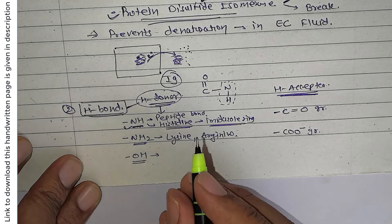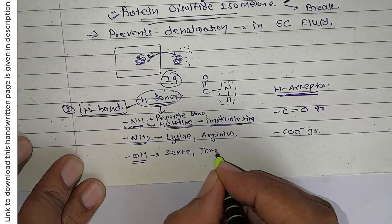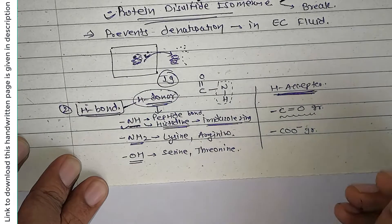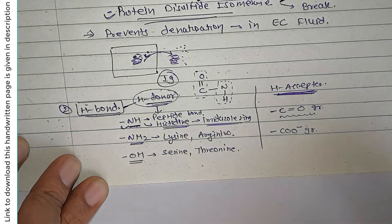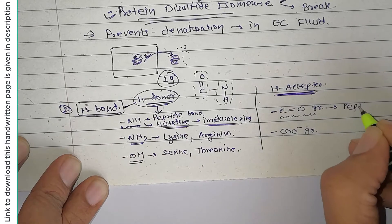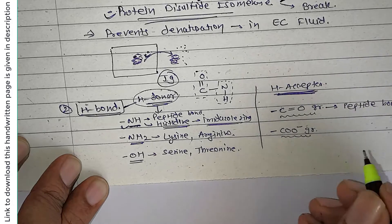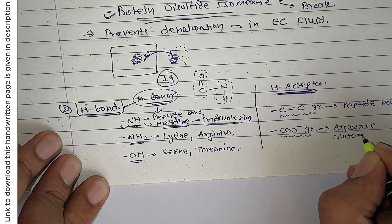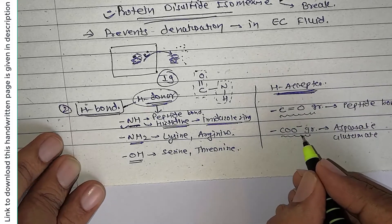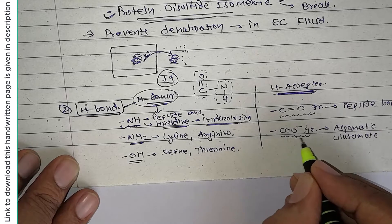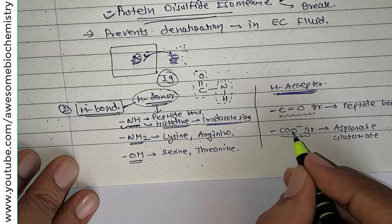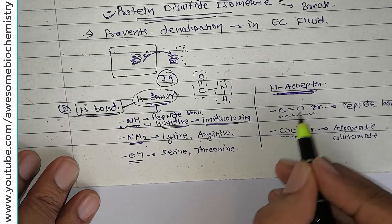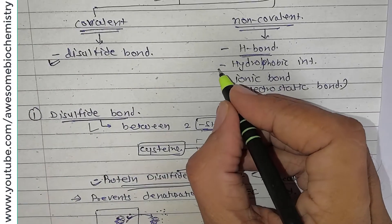Regarding hydrogen bond acceptors, the C=O group comes from the peptide bond. The carboxyl group (C=O⁻) is found in the side chains of aspartate and glutamate. Note that all amino acids contain a C=O⁻ group bound to the alpha carbon, but those are not free in peptides because they participate in the peptide bond itself.